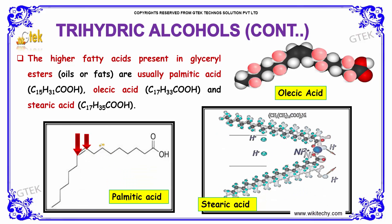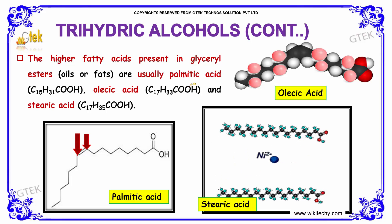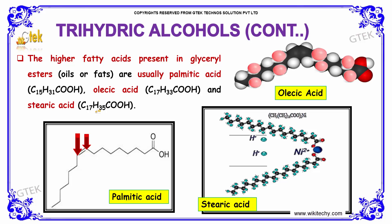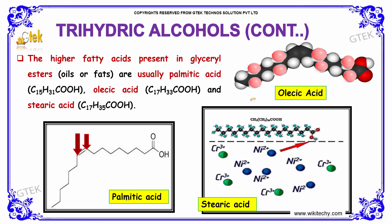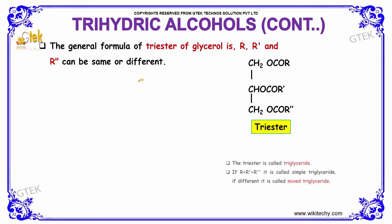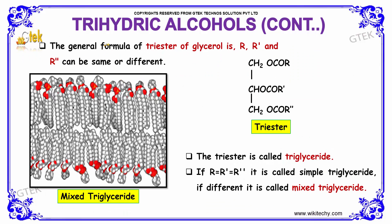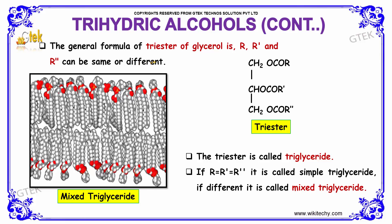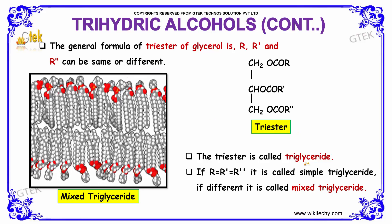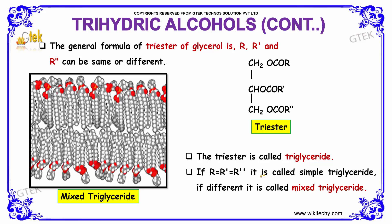The higher fatty acids present in glycerol esters are usually palmitic acid, oleic acid, and stearic acid. The general formula of triester of glycerol involves R, R', and R'' groups, which can be the same or different aryl or alkyl groups. The triester is called triglyceride.